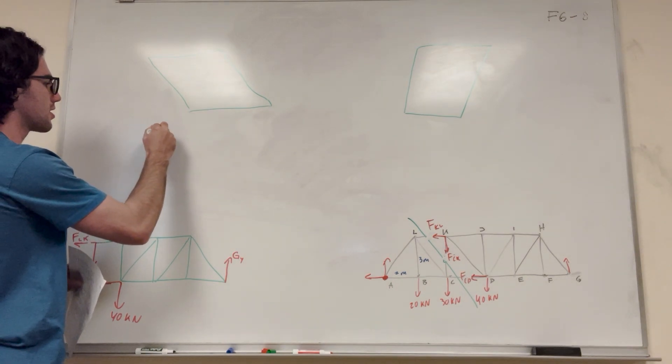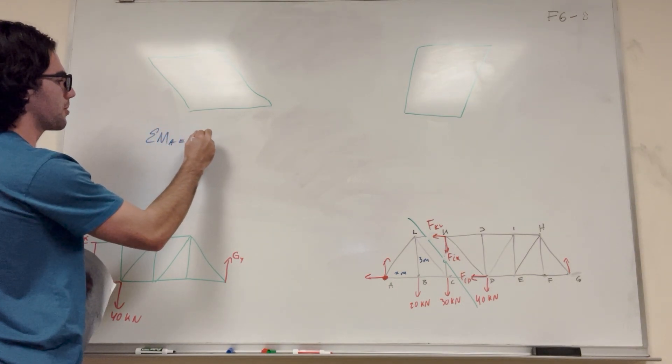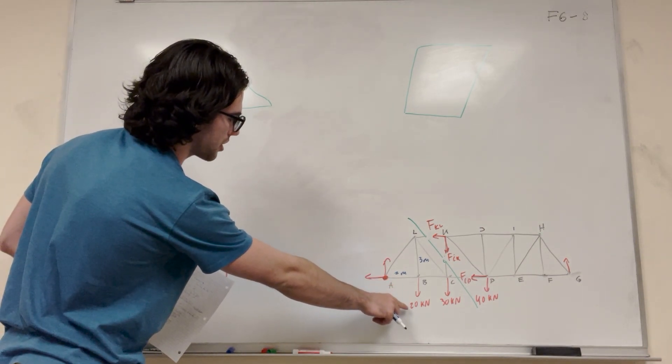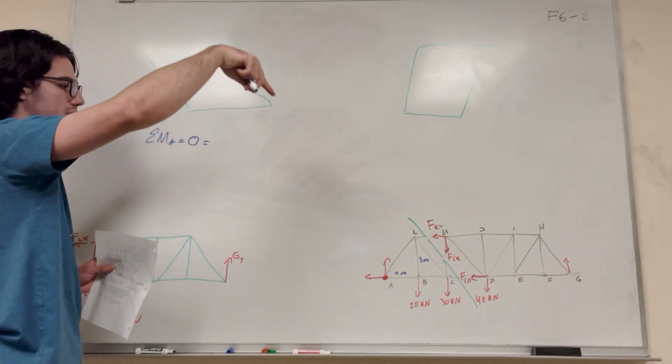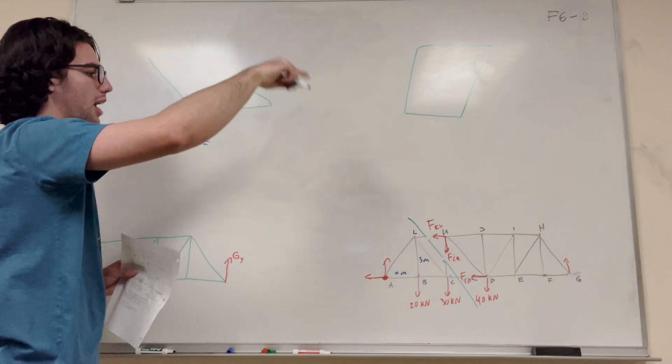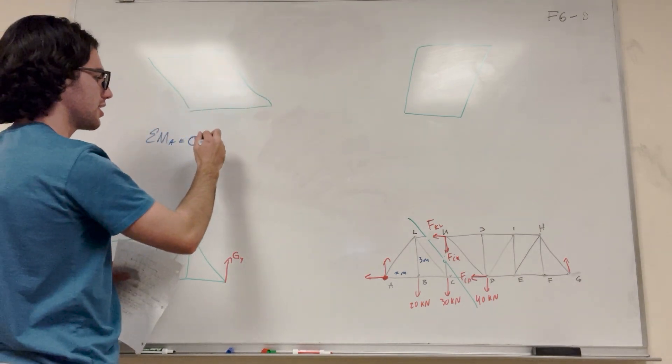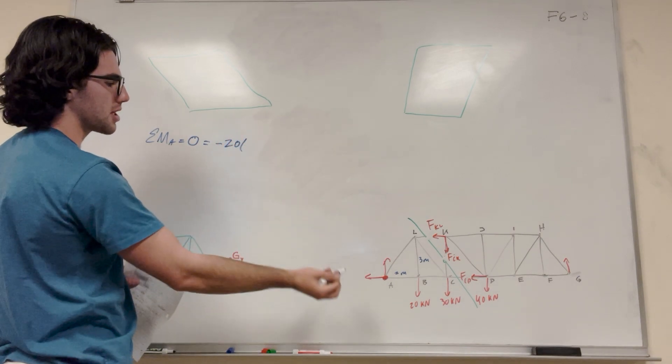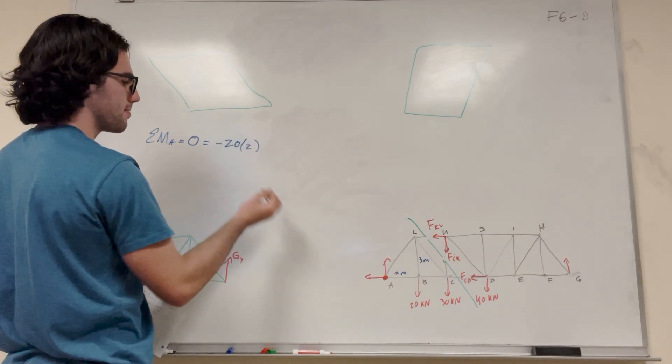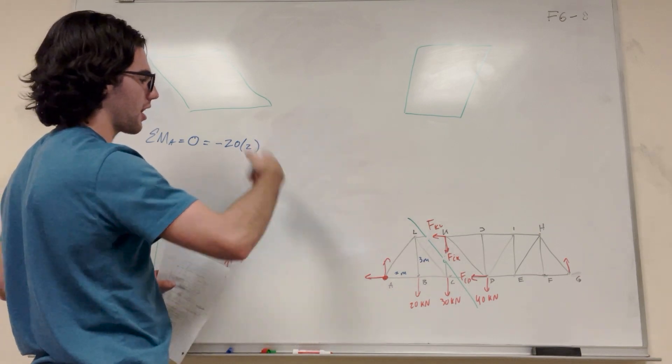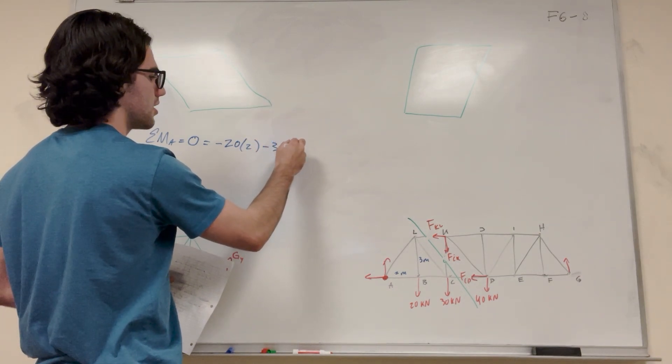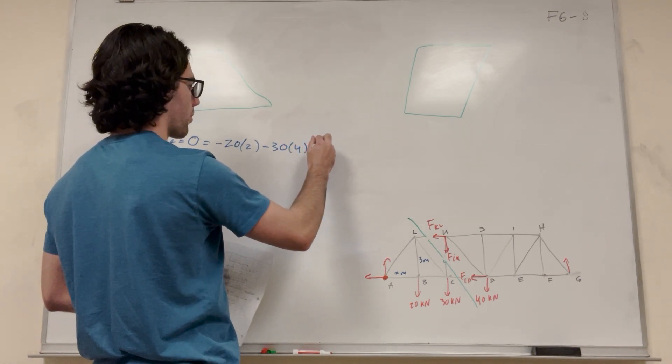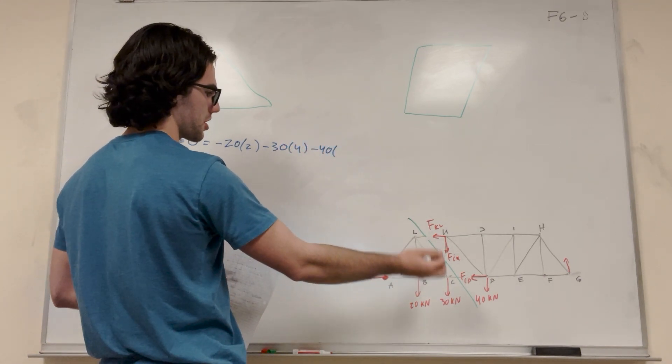So if we take the sum of the moments around A, we know it's going to be zero because we're at equilibrium. So let's look at the starting diagram. So this is two meters, and this is 20 kilonewtons. So it's pushing down. It's going to make us want to go clockwise. So it's going to be a negative sign, negative 20 kilonewtons times its distance, which is two. Next one is 30, so it's going to be the same way clockwise, so negative 30 times its distance, which is four now. And then the next one is negative 40 times its distance, which is six.